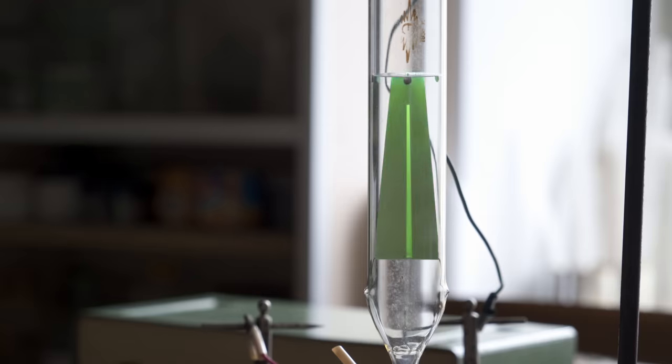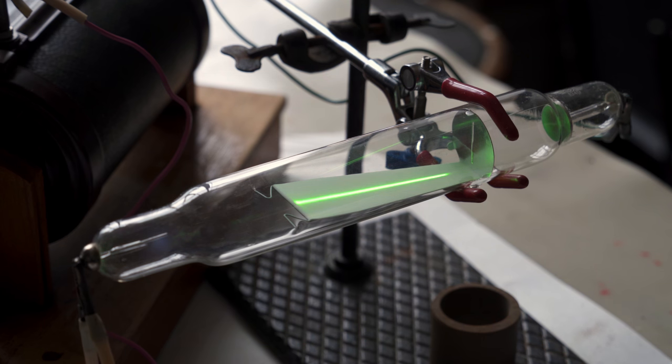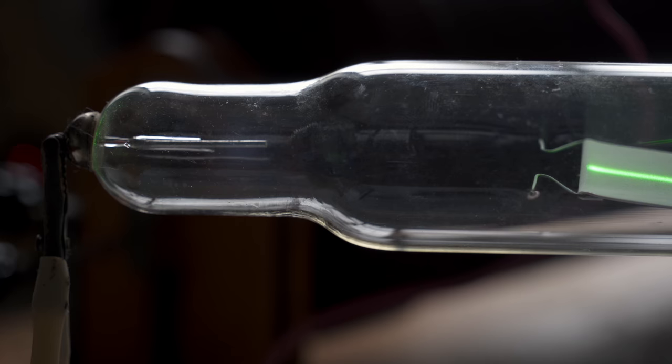Then they fall on a plate located at an angle on which the aluminophore is applied and we see such a green stripe. Some electrons manage to reach the anode and we see a beautiful glow around it.